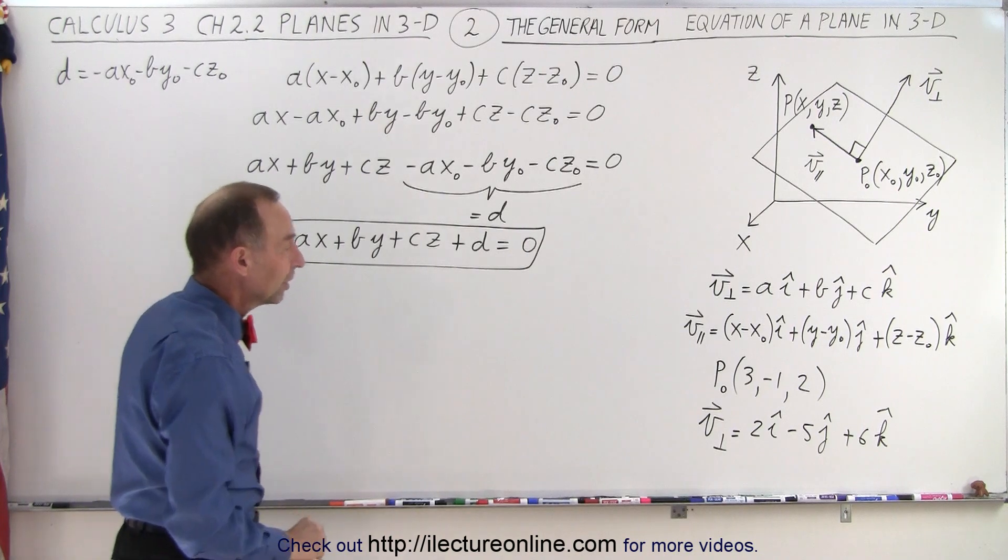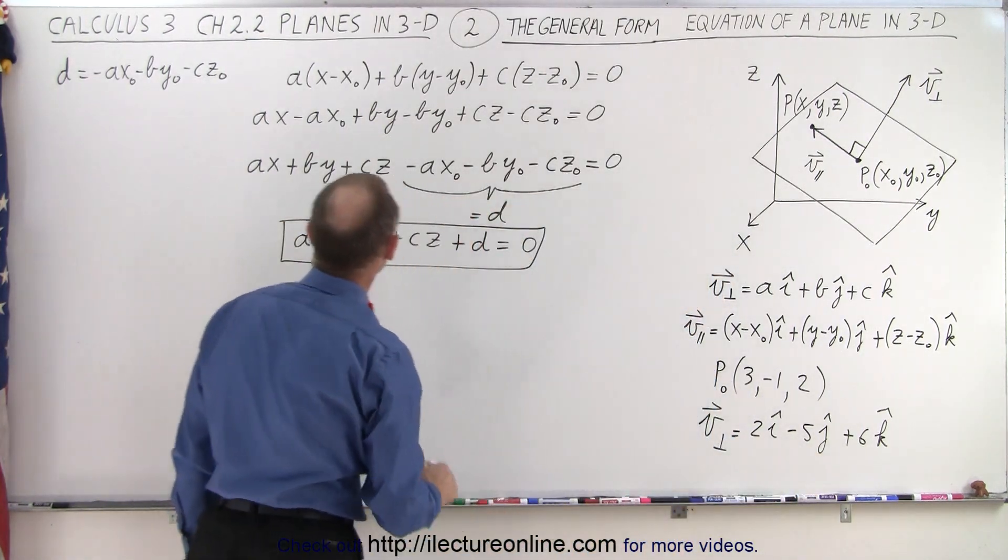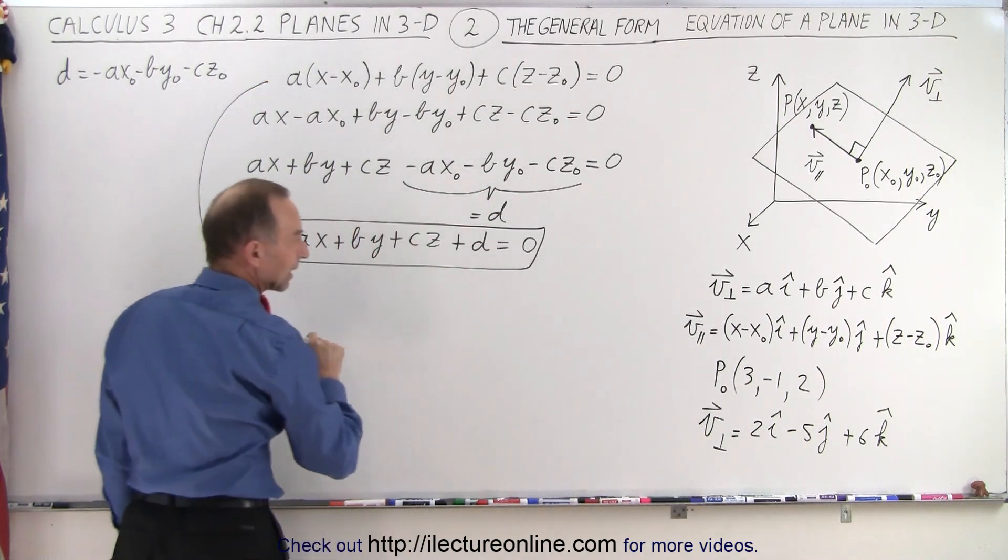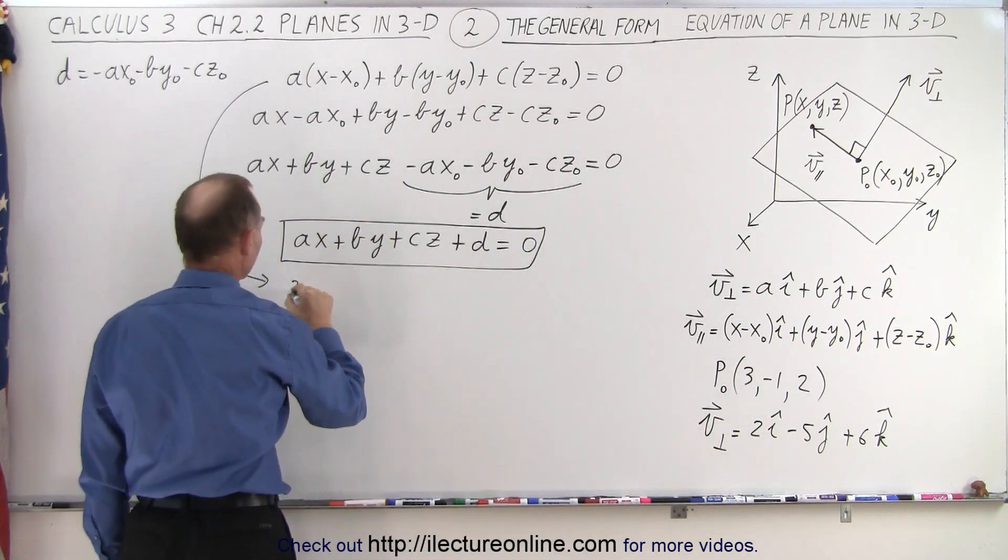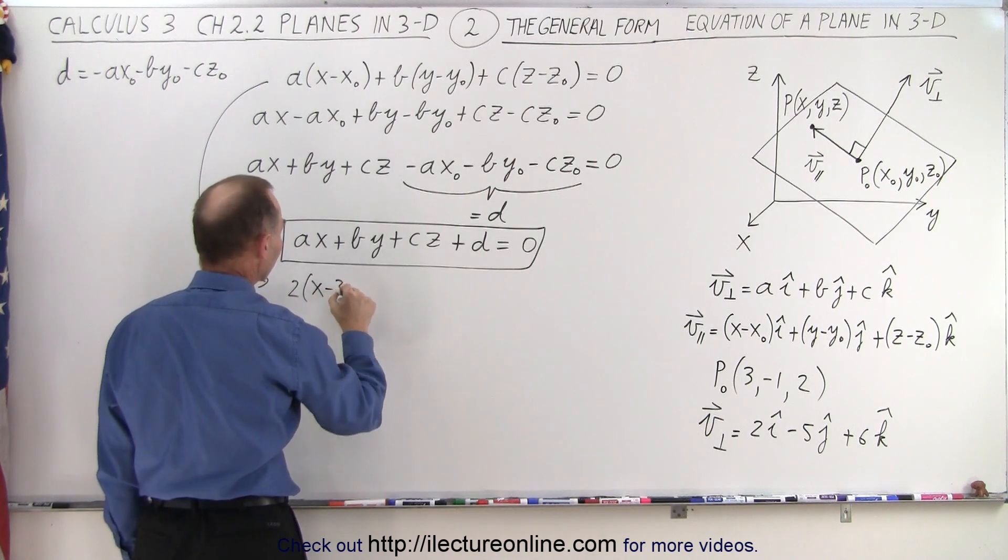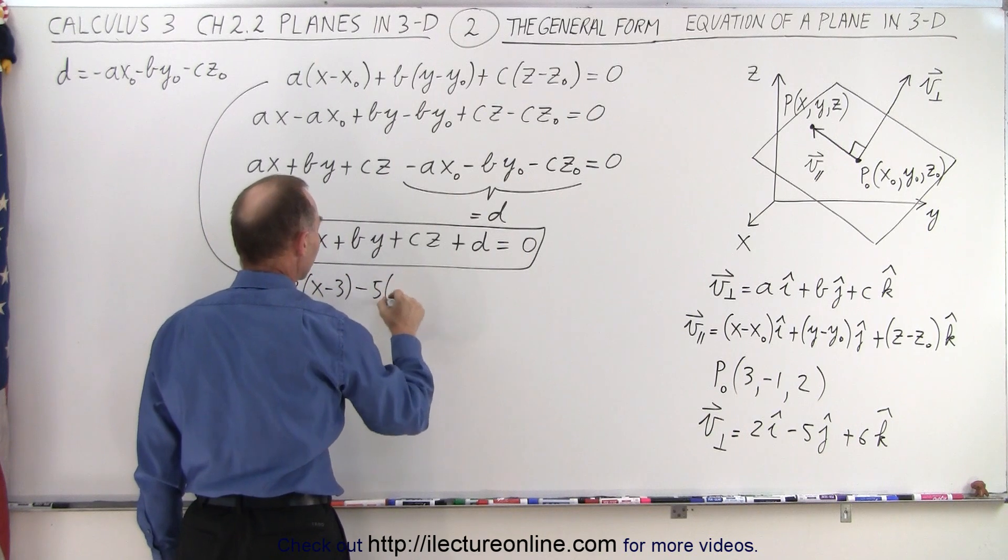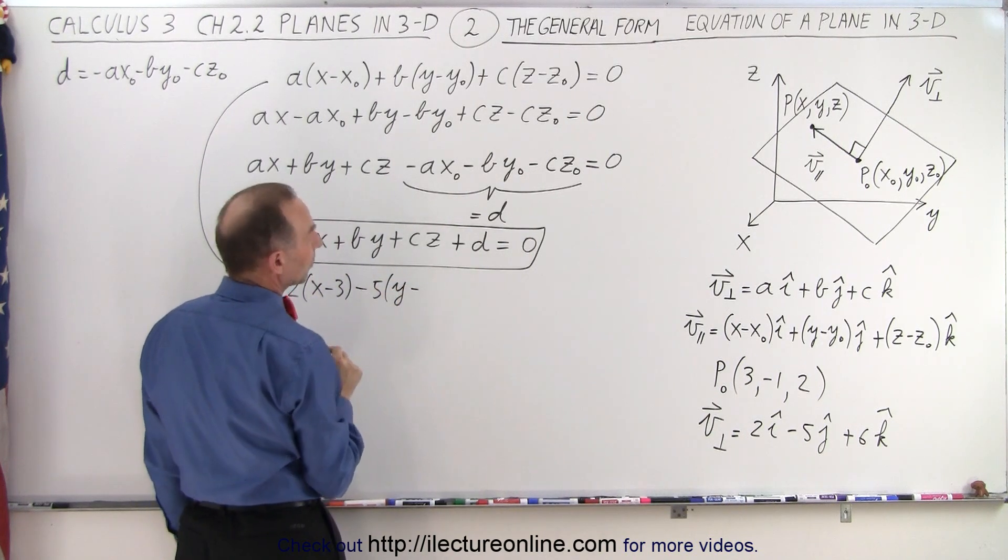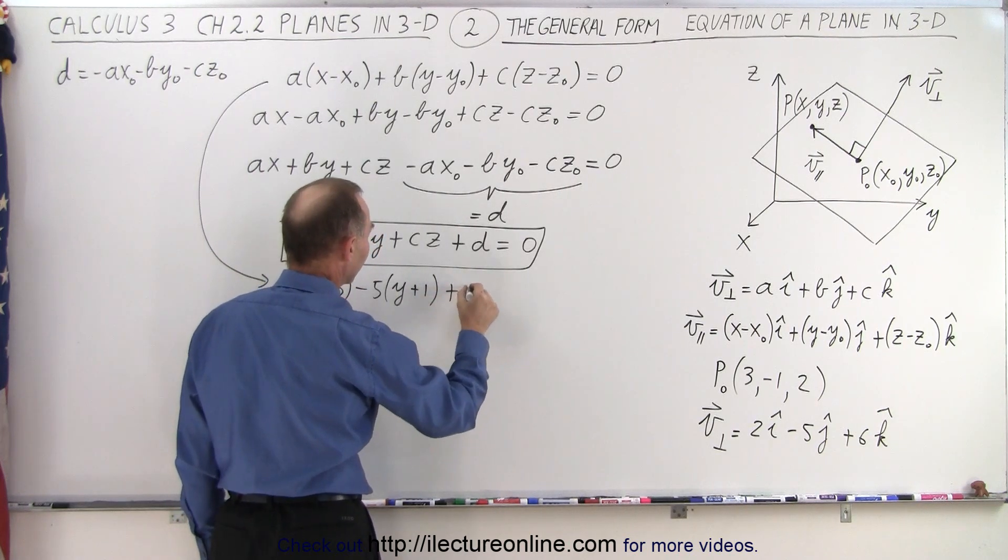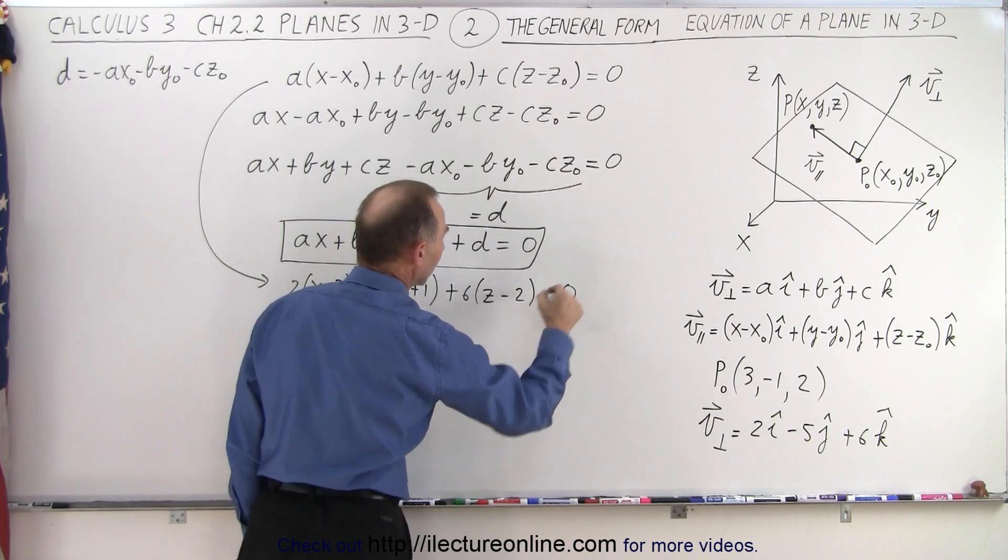So let's go ahead and take what we have over here. Notice, when we take that and plug that into the point form of the equation, we take A, which is 2, times X minus X sub-naught, which in this case is 3, and now we have minus 5 for B, times Y minus Y sub-naught, then Y sub-naught is negative 1, so it becomes plus 1, and now we have plus 6 times Z minus Z sub-naught, which is 2, and we set that equal to 0.